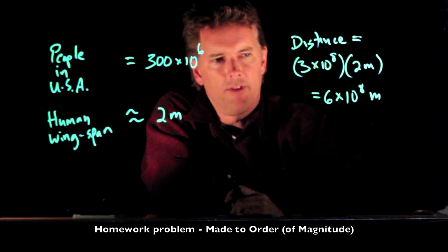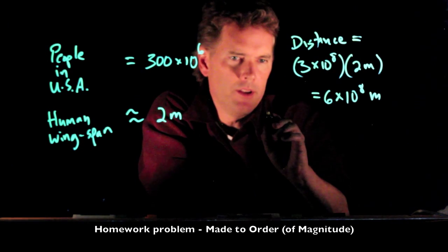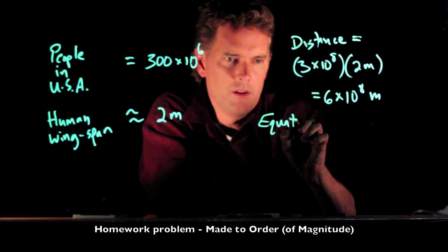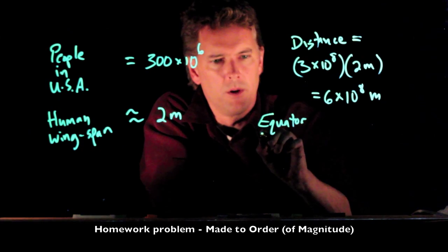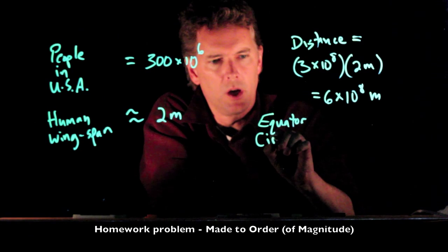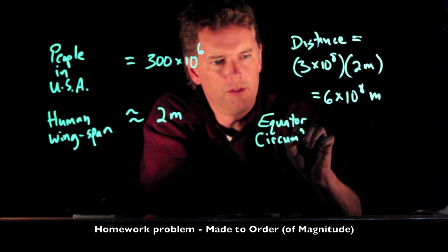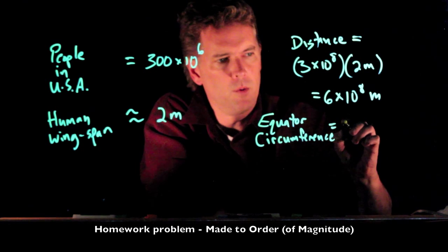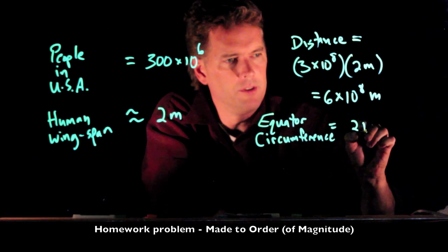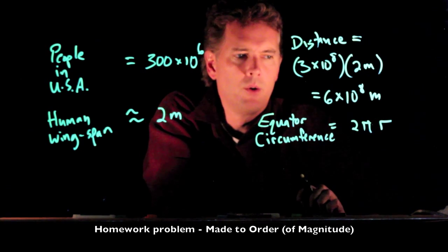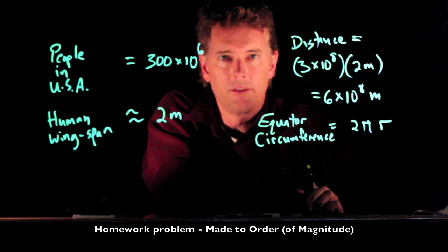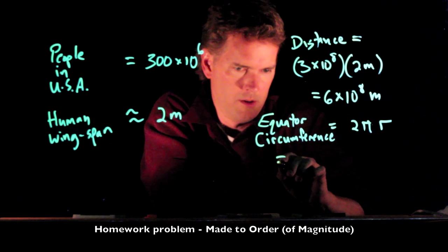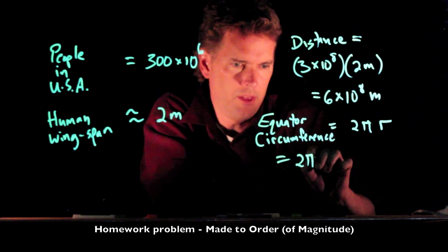Now, how far around do you go if you're on the equator? We want the equator circumference, which equals 2πr, where r is of course the radius of the Earth. What's the radius of the Earth?